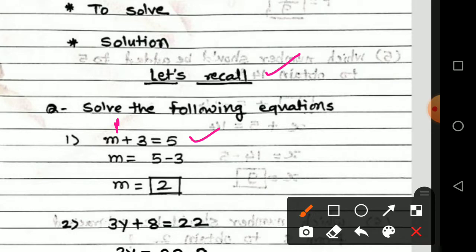What are the general rules for solving equations? We collect the variable terms to the left side and the numerals to the right side. For example, m is already on the left, but numeral 3 is also on the left — transpose this 3 to the right side. It becomes negative, so five minus three means two, and m is equal to 2. That is the solution.